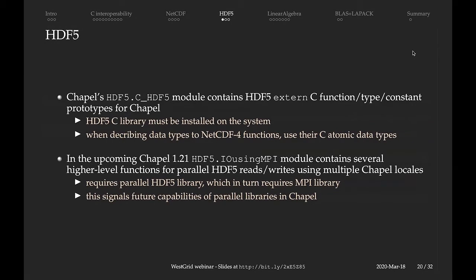Next, we look at the HDF5 library. In HDF5, there are several sub-modules. One is CHDF5, which provides external C function, type, and constant prototypes for Chapel — the same idea as with NetCDF. In the upcoming Chapel 1.21, there is another sub-module inside HDF5 called IO using MPI, which includes several high-level functions for reading and writing parallel HDF5 files. This is great because Chapel is a parallel language, and we now have the ability to do parallel IO from Chapel.